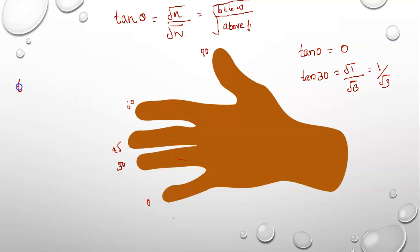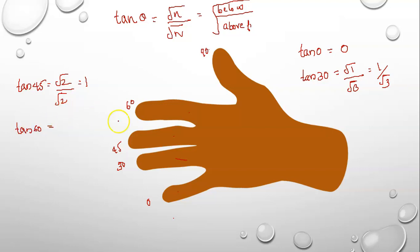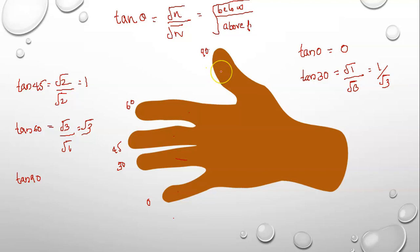Tan 45 — below finger is 1, 2; above finger is 1, 2 — root 2 by root 2 is 1. Tan 60 — below finger is 1, 2, 3; above finger is 1 — root 3 by 1, so the answer is root 3. Tan 90 — below finger is 4, above finger is 0, so it is undefined.